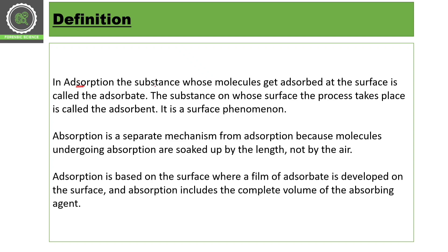In adsorption, the substance whose molecules get adsorbed at the surface is called the adsorbate. The substance on whose surface the process takes place is called the adsorbent. So the adsorbate is accumulating on the surface of the adsorbent.